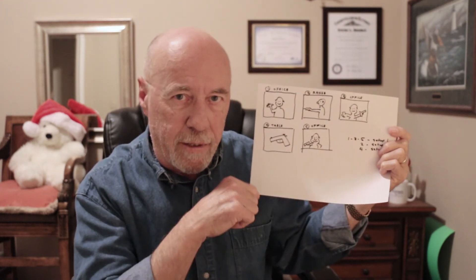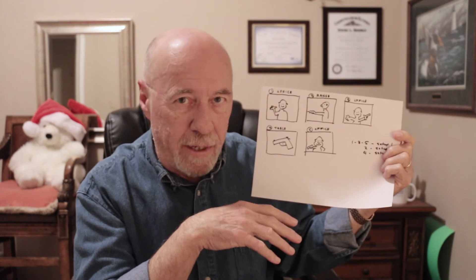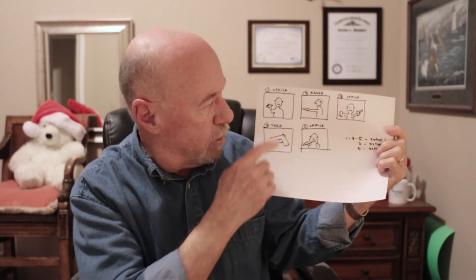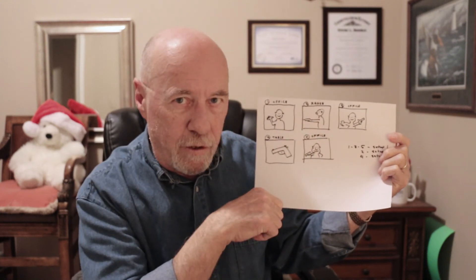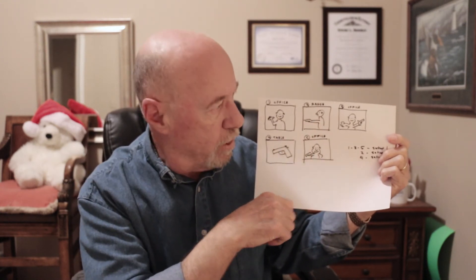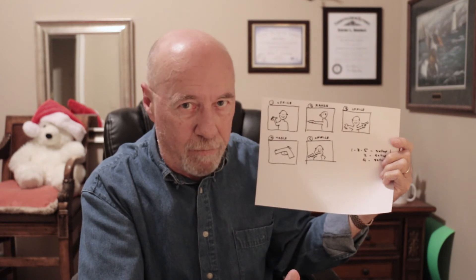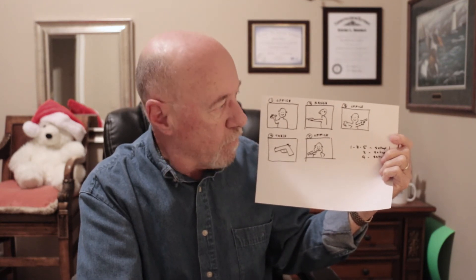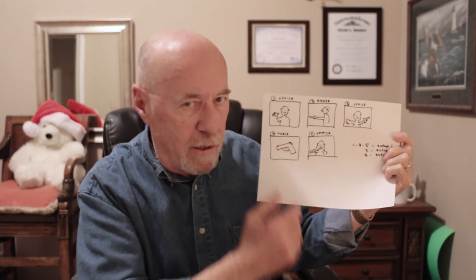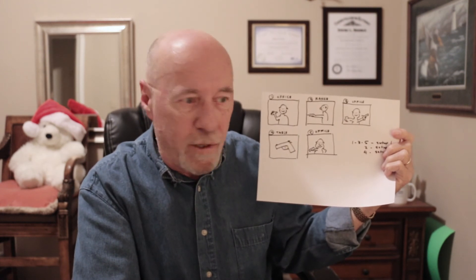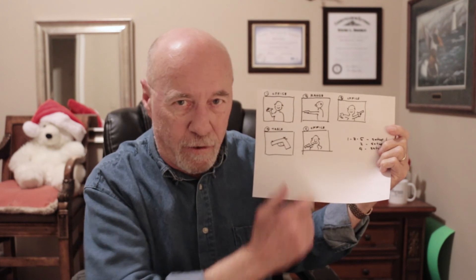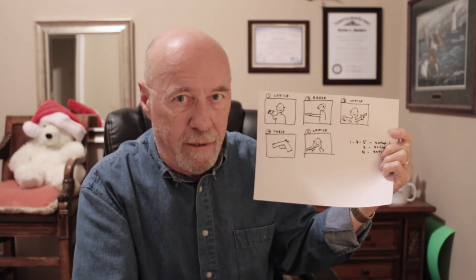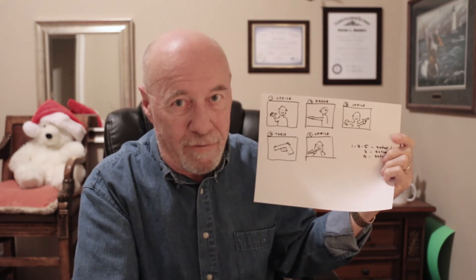There are a number of ways this can be done. The first way — and probably the most inefficient — is to shoot the scene in the office, go to the range and shoot that footage, come back to the office, set the camera up again and try to get it back where it was, shoot that scene, move the camera for the tabletop review, and then move the camera again to shoot the final scene. That's one way, but it's not a very good way.